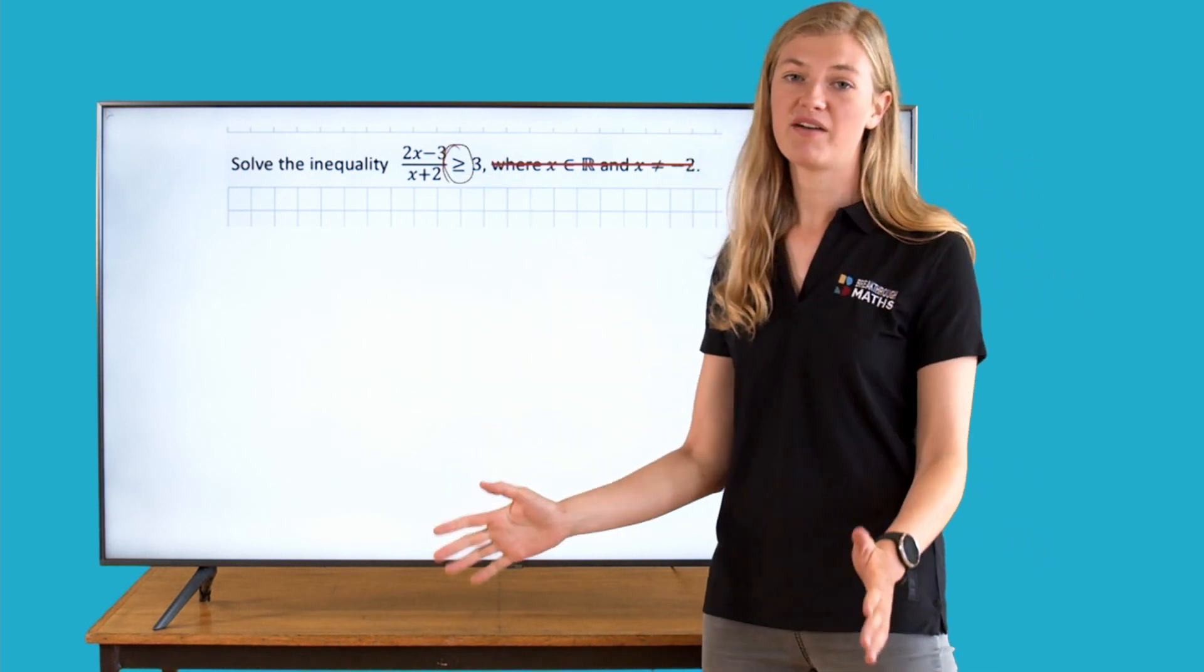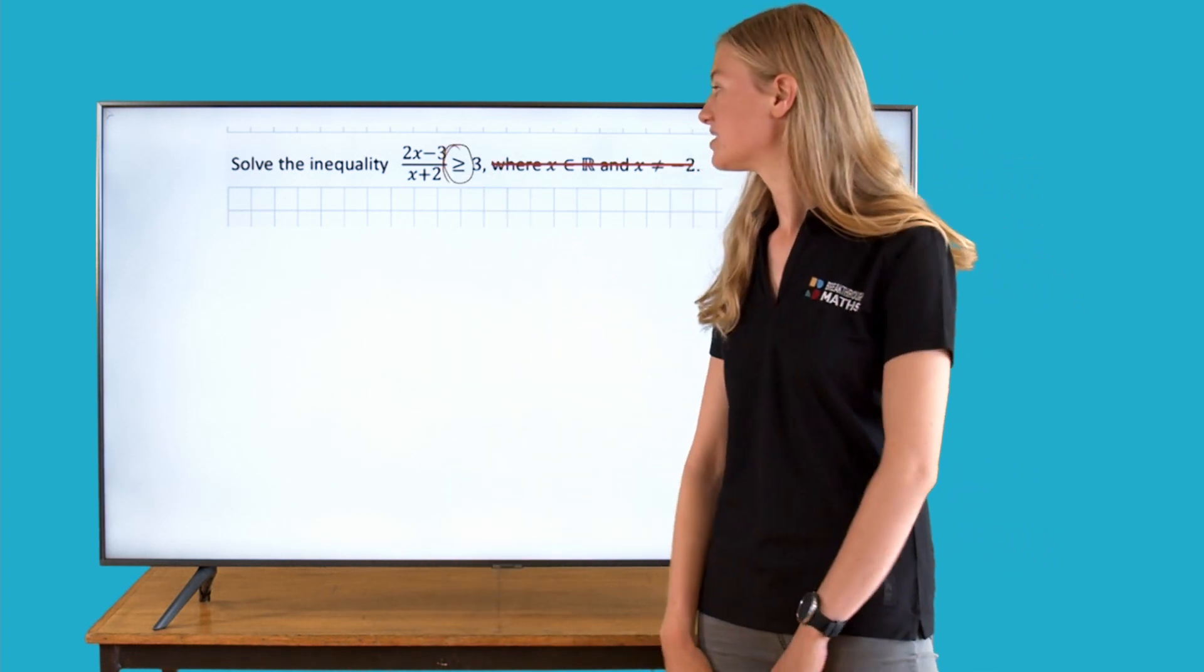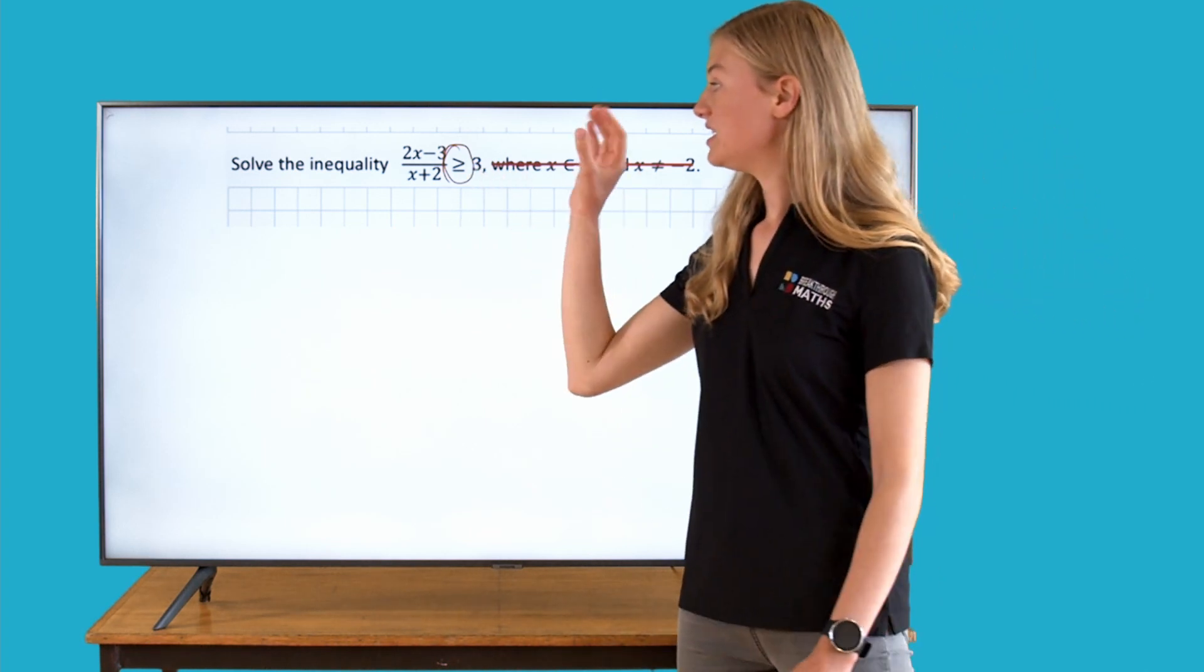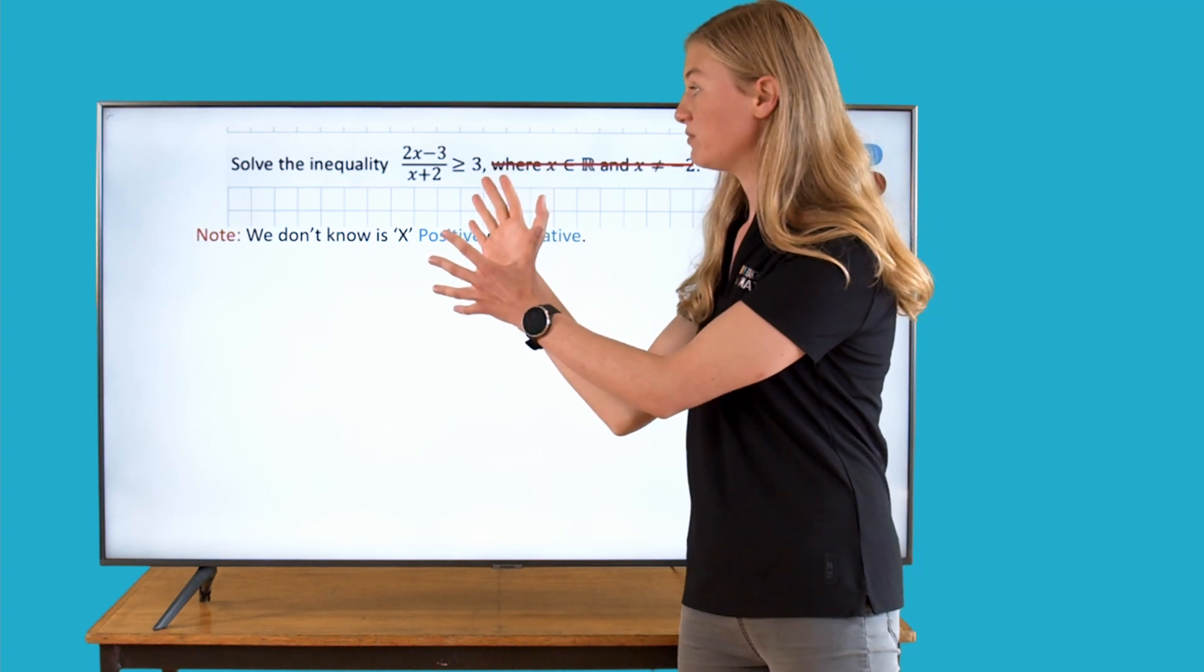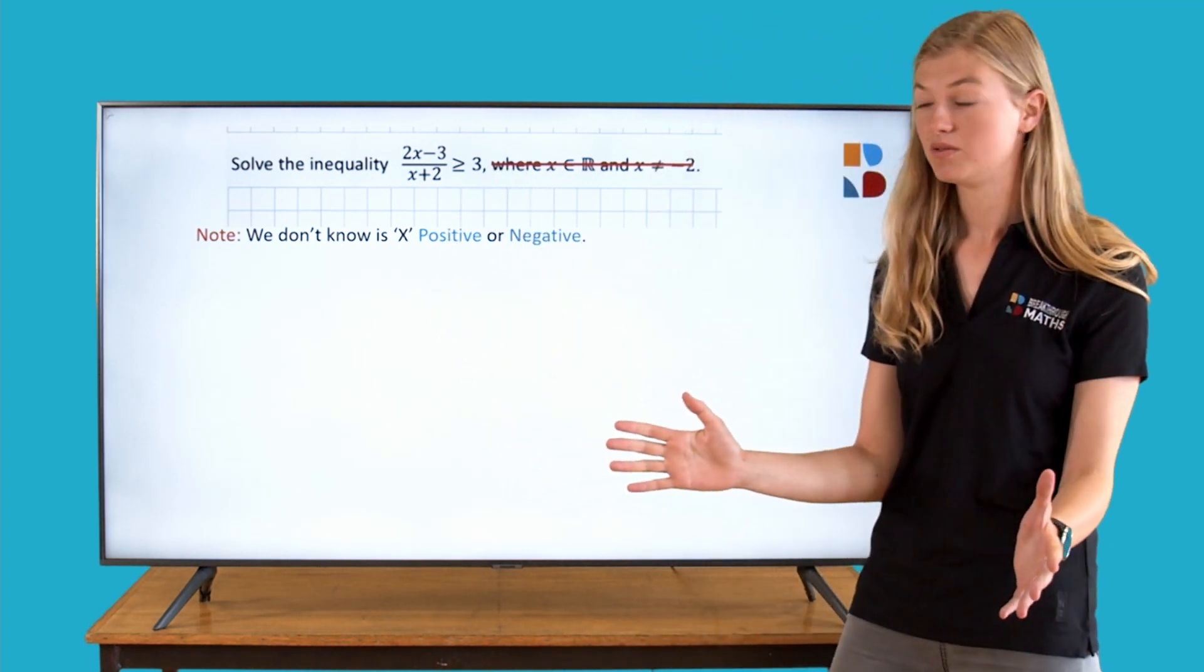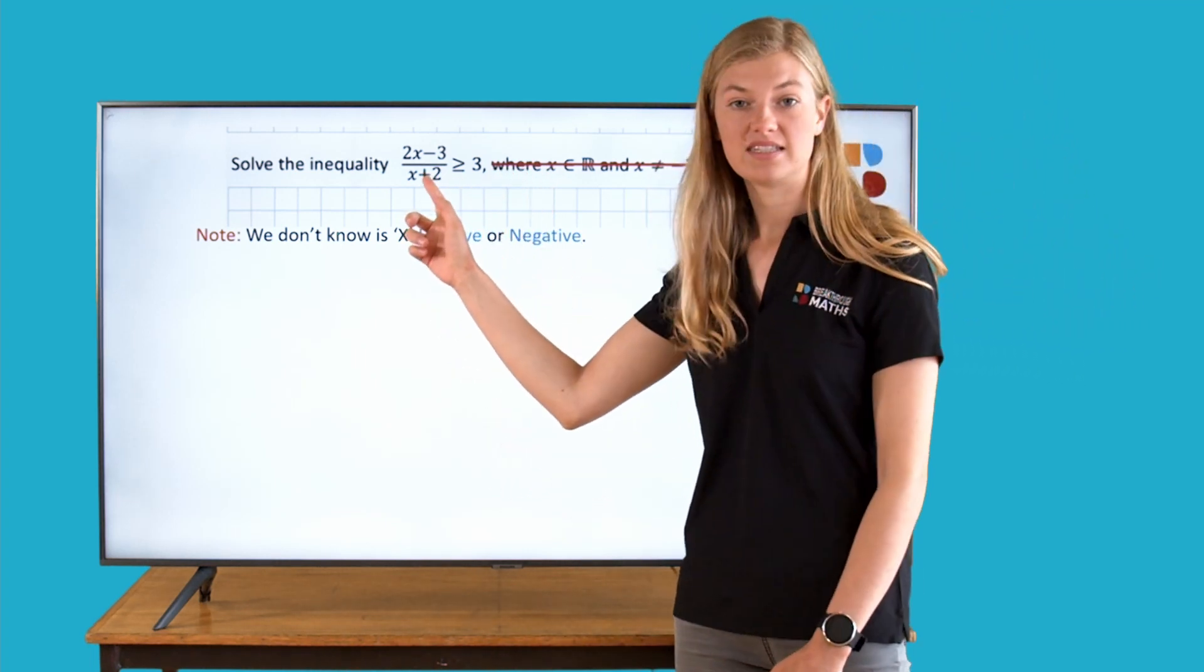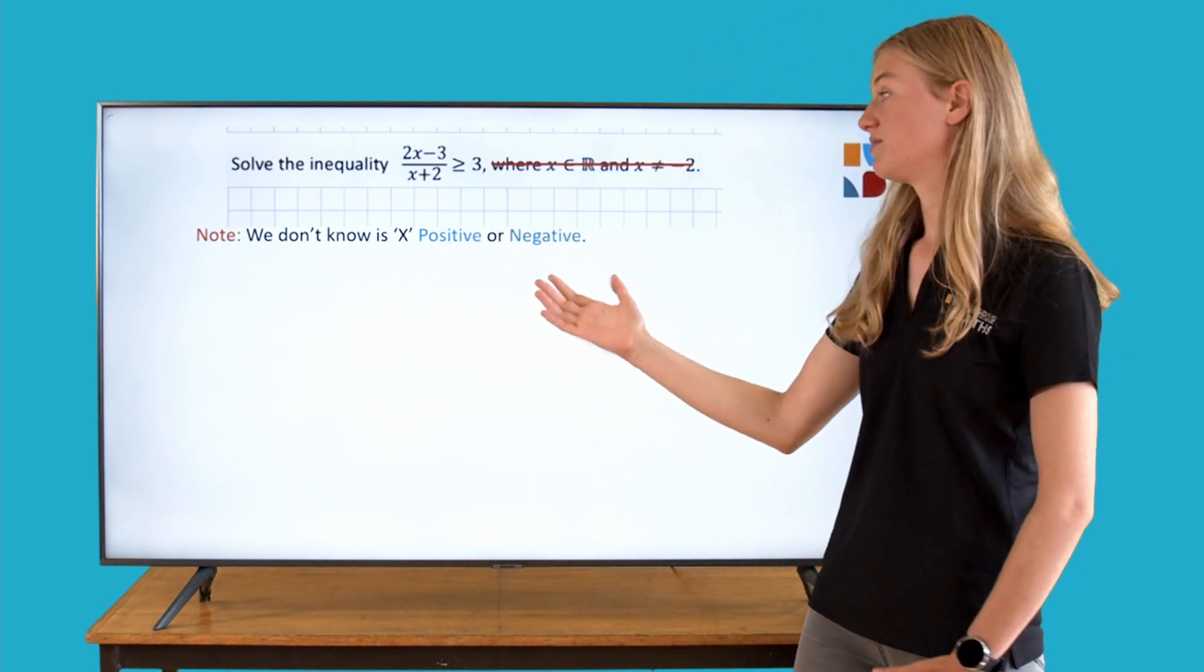The one thing we have to always remember about inequality signs is that if we have a negative and we divide by a negative, it's going to turn around, which is a bit of an issue. We don't know what x is here, so it could be positive or it could be negative.